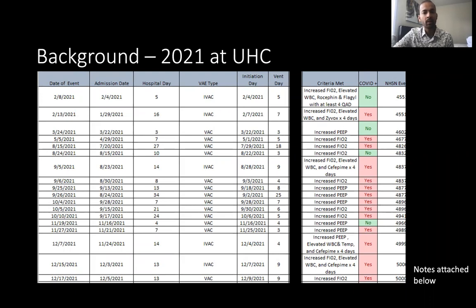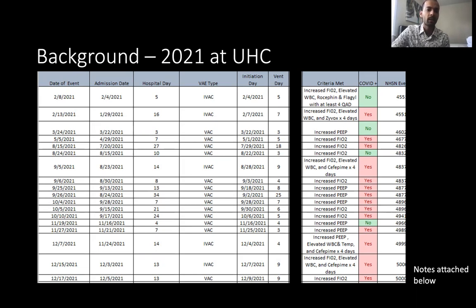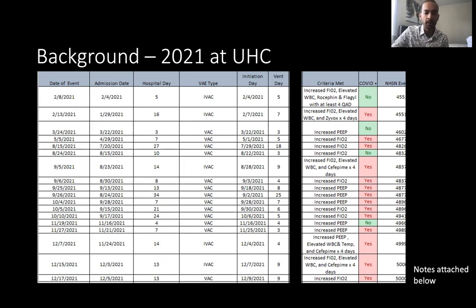In early 2020, because of COVID restrictions, a lot of elective and semi-elective procedures were shut down, which may have influenced the number of ICU post-op surgical patients. People also stopped coming to the hospital. As you can see here, most of the VAEs reported in 2021 happened in August, September, October, November, and December.